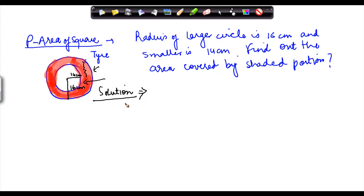If we know these two, then basically we can find out what is the area of the shaded portion. So, area of shaded portion is equal to area of, let's say this is circle 1 and the smaller one is circle 2. Area of circle 1 minus area of circle 2.